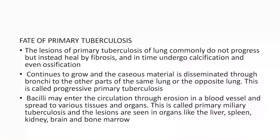The fate of primary tuberculosis: lesions commonly do not progress but instead heal by fibrosis, and in time undergo calcification and even ossification. However, the lesion may continue to grow and caseous material can be disseminated through bronchi to other parts of the same lung or the opposite lung — this is called progressive primary tuberculosis. Bacilli may also enter the circulation through erosion of blood vessels and spread to various tissues and organs — this is called primary miliary tuberculosis.